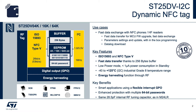Before getting into the specifics of the factory inbox programming use case, I want to talk a little bit about the key device used: the ST25 DV I²C dynamic NFC tag. A dynamic NFC tag has an RF interface — in this case an ISO 15693 Type 5 interface.